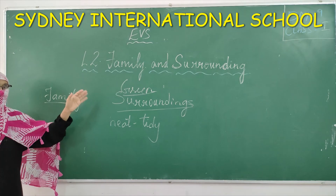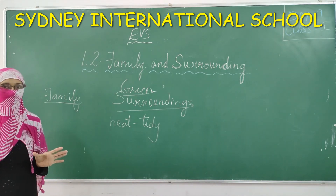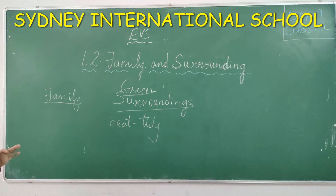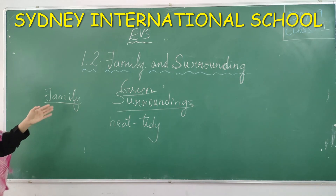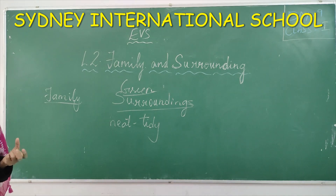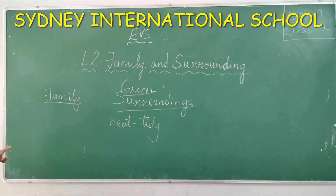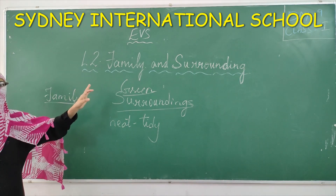In this lesson we have studied family — what is the family — and surroundings — how you should keep your surroundings. Whether you are in your room, your house, your class, or outside, everywhere try to maintain cleanliness. Keep yourself, and your surroundings, neat and tidy. In order to keep our surroundings green, plant more trees. Trees give us oxygen which is very essential for us, cool breeze, fresh air, shade, and fruits. Remember children, try to keep your surroundings neat and clean and plant more and more trees. Hope you have understood the lesson — family and surroundings. Thank you.